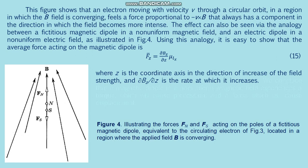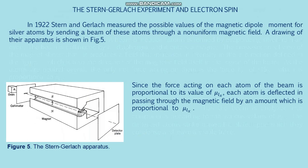Figure four illustrates the forces on the poles of the fictitious magnetic dipole equivalent to the circulating electron. In 1922, Stern and Gerlach measured the possible values of the magnetic dipole moment of silver atoms by sending a beam of these atoms through a non-uniform magnetic field. A drawing of their apparatus is shown in figure five. A beam of neutral atoms is formed by evaporating silver from an oven; the beam is collimated by a diaphragm and enters the magnet.